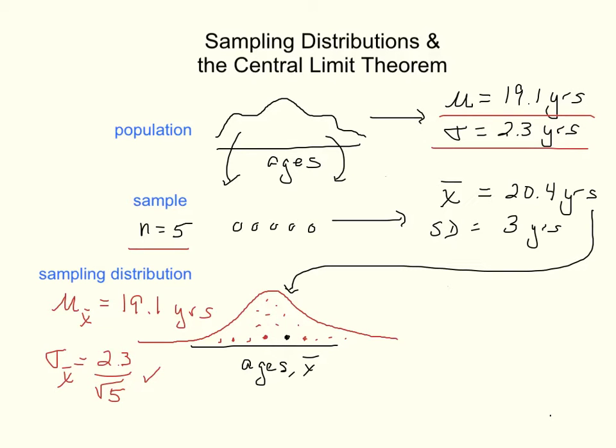Now, often in statistics, we want to take larger samples than samples of size 5. And if, for example, we were to change our sample size from 5 to, say, 90, what would happen?